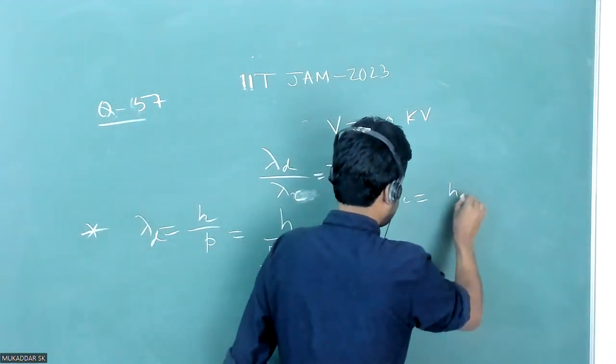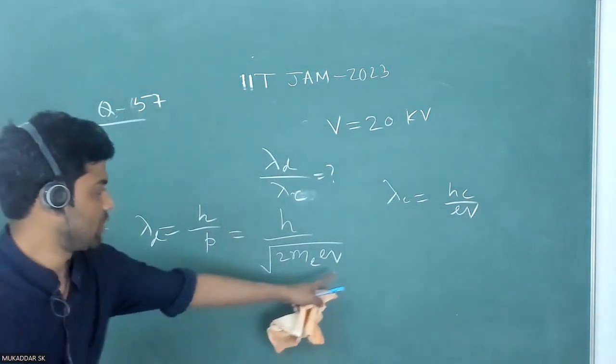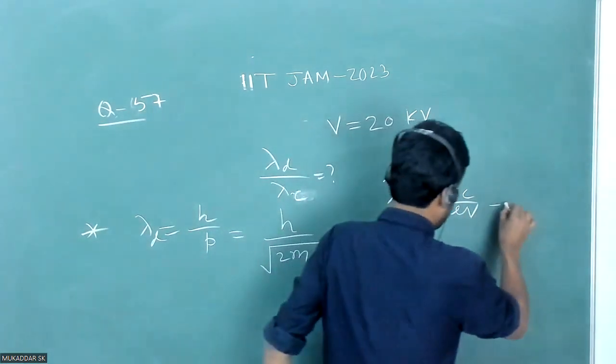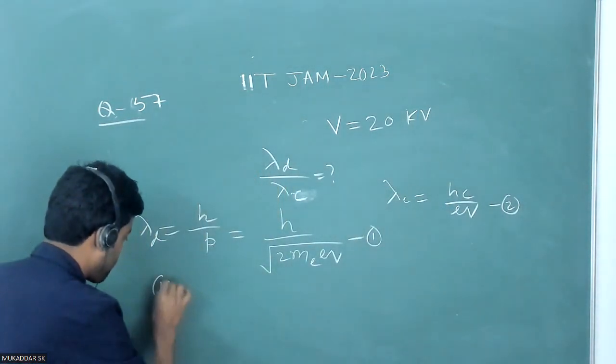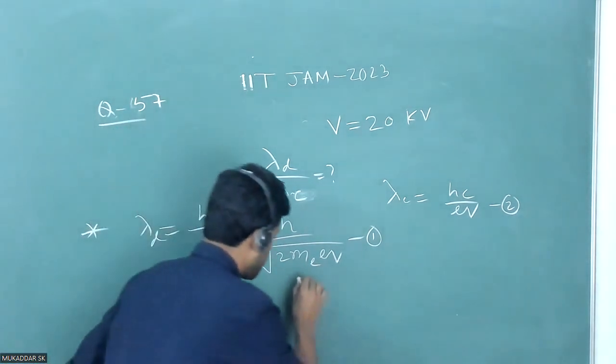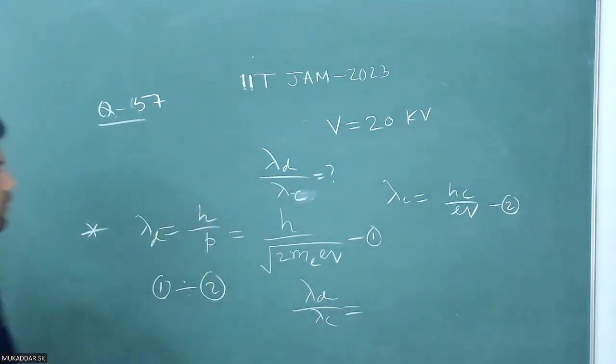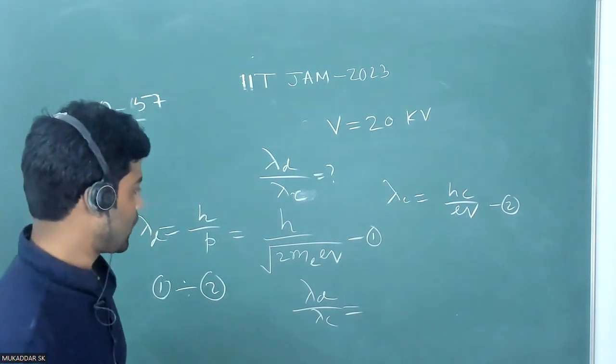The minimum wavelength of X-ray is hc by eV, where V is the applied potential difference. This is equation number one and equation number two. If I divide equation one by two, I will get de Broglie wavelength of electron to that of minimum wavelength of X-ray.